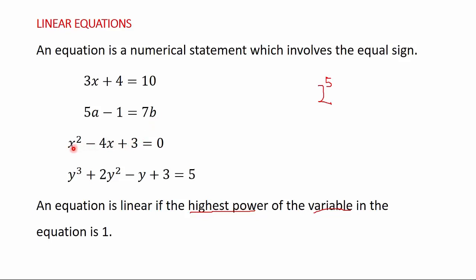Now let's consider s squared minus 4x plus 3 equals 0. The variable is x. The power of x in the first term is 2, and the power of x in the second term is 1. So x has powers 2 and 1, and since 2 is the highest, the highest power of x in this equation is 2. Because the highest power is 2, this equation is not linear.